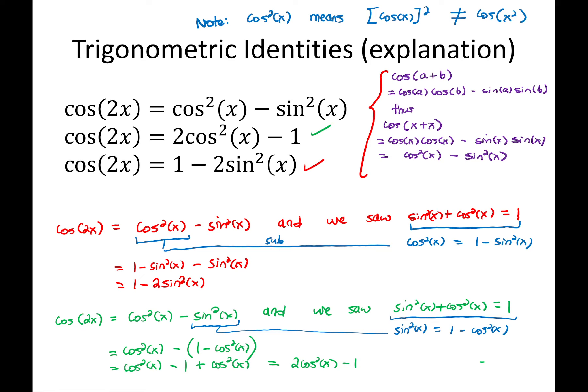So the connection, first of all, the cos of A plus B formula is needed to derive one of these. So I use the first one. And then the rest of them follow as a consequence of sine squared plus cos squared being equal to 1.